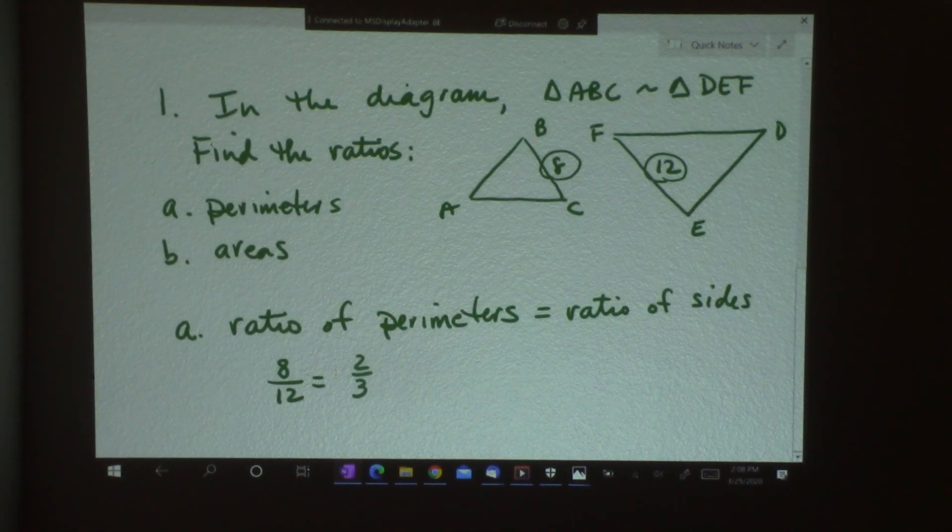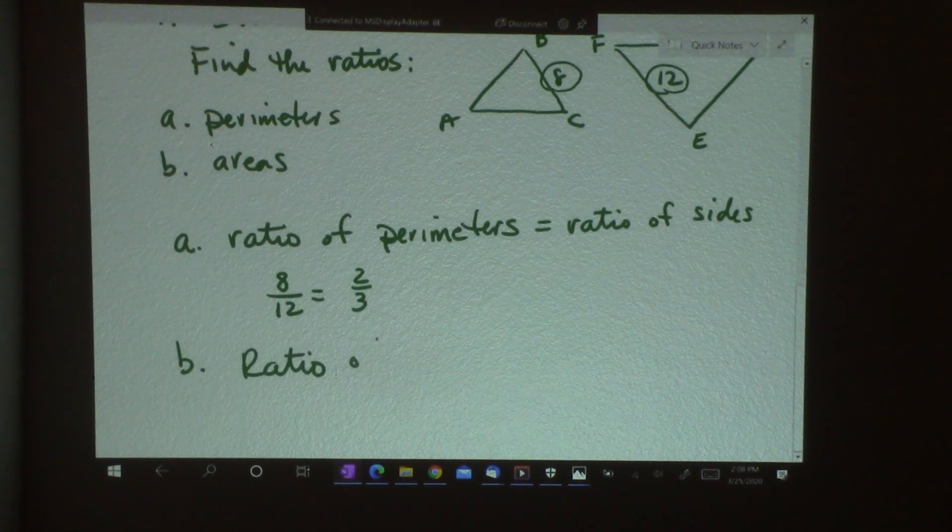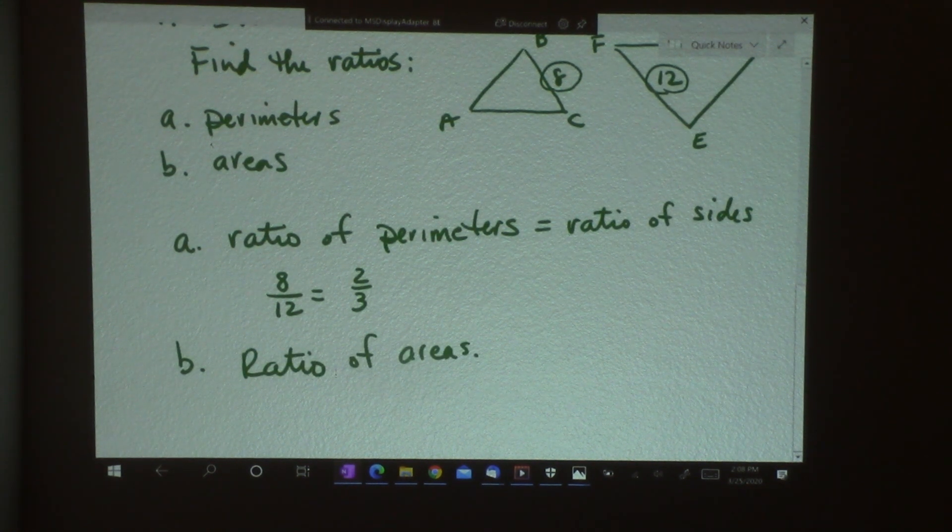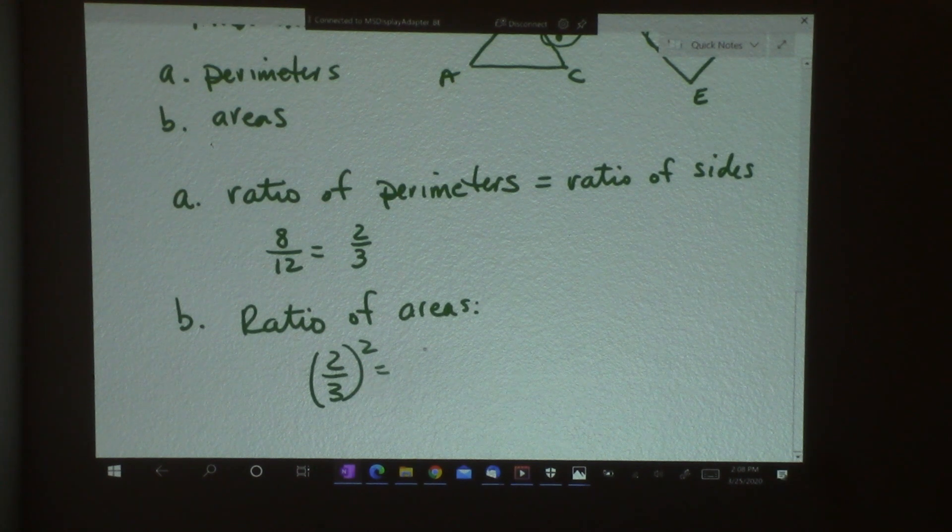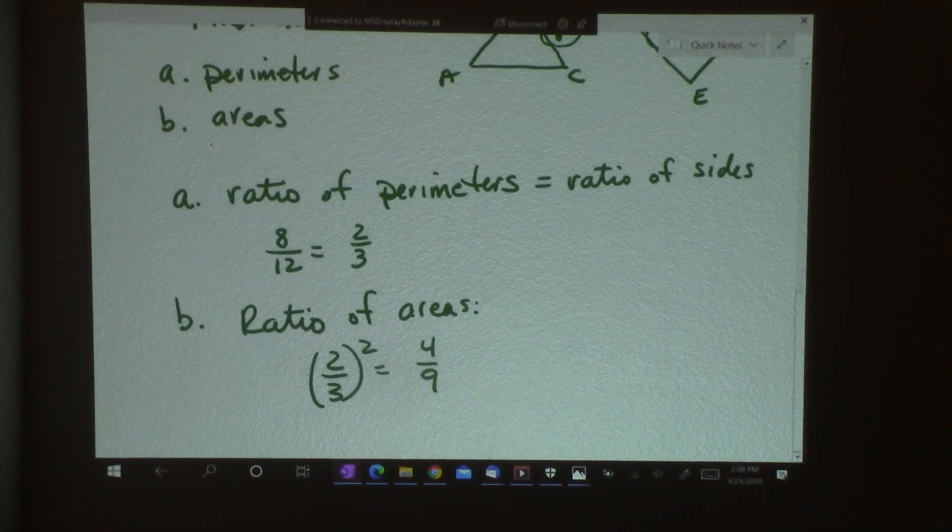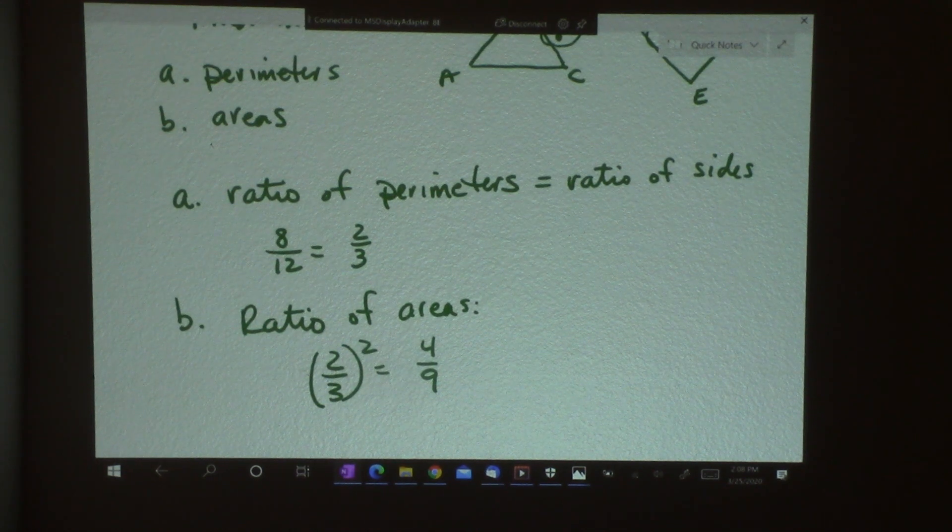Now for area, I take that ratio of the sides, 2 thirds, and I square it. Ratio of areas, that's going to be whatever I had for the sides, I'm going to square it. So it becomes 4 over 9. It's not doubled, it's squared. So that would be the answer for number 1.